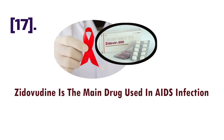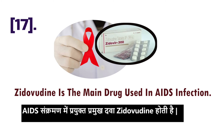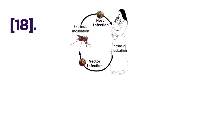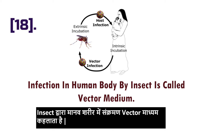Point number seventeen: Zidovudine is the main drug used in AIDS infection. Point number eighteen: infection in the human body by an insect is called vector-mediated transmission.